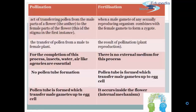As you can see in the diagram or in the given data, pollination is an act of transferring pollen from the male parts of the flower — the anther — to the female part of the flower, which is the stigma in the first instance. Fertilization is when a male gamete of any sexually reproducing organism combines with a female gamete to form a zygote — this is called fertilization.